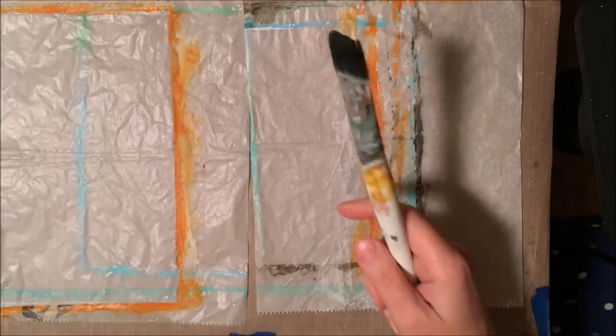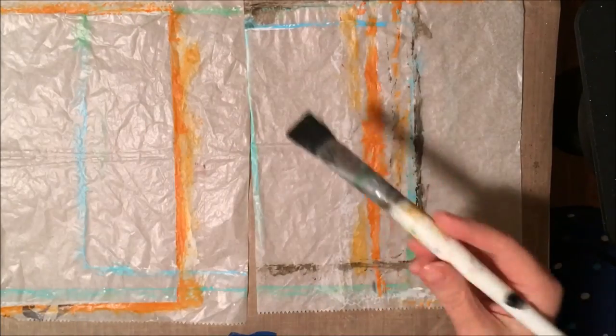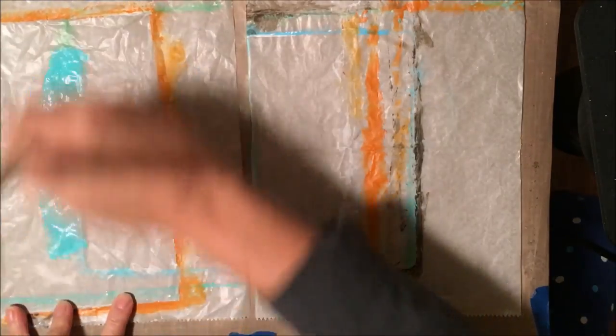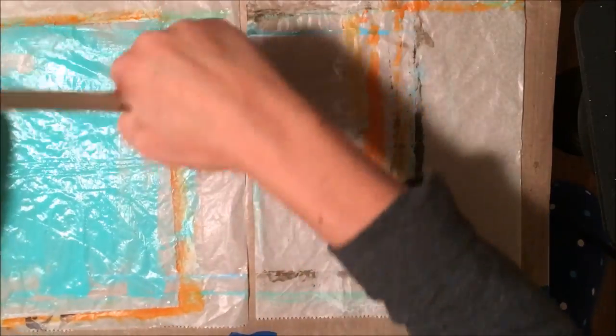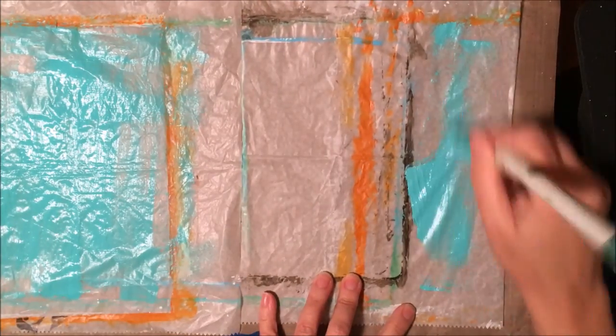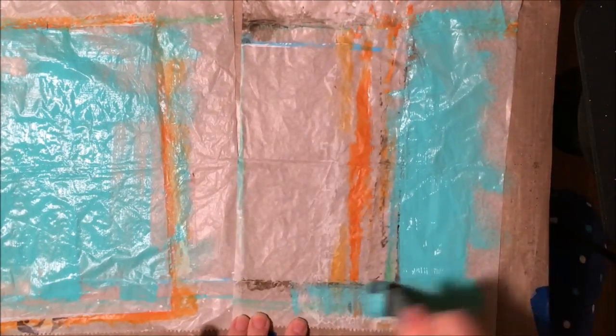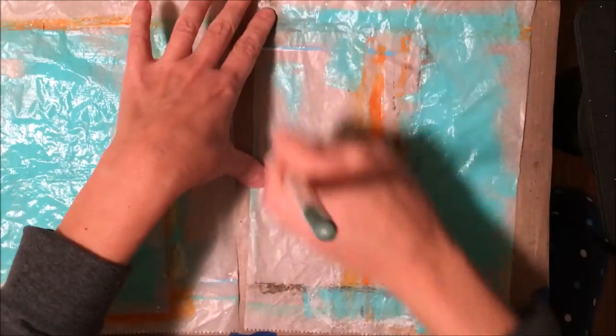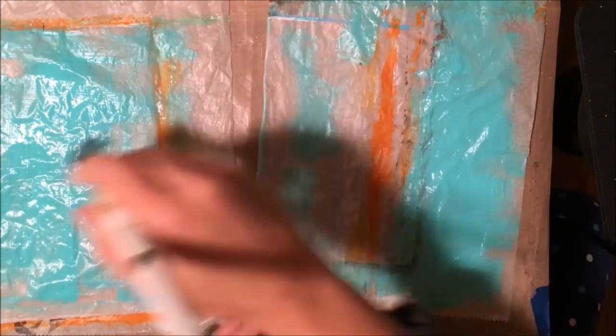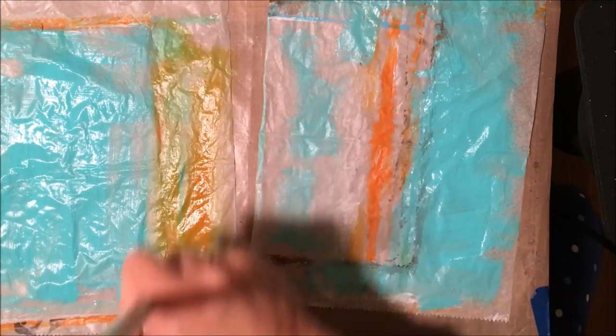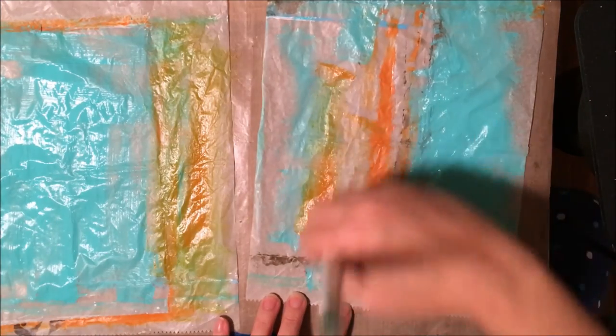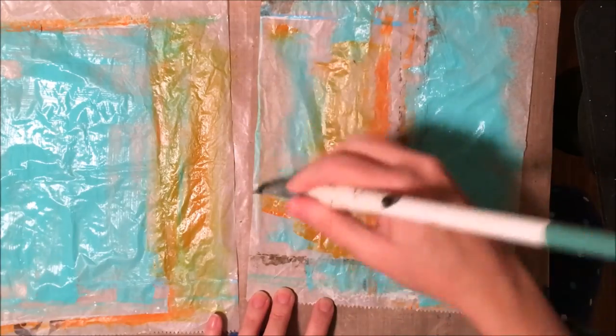So I have some paint out on a palette sheet and these are just some scrap deli paper that I use behind my journals to keep paint from going on the other pages. And all I am doing is putting some paint out all over this deli paper. You can tell I'm not really being very careful with anything. I'm just kind of slathering this on.